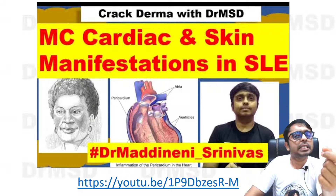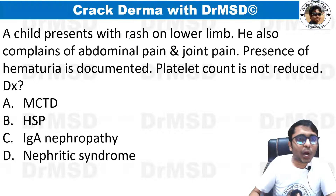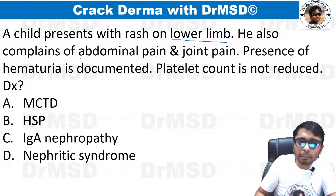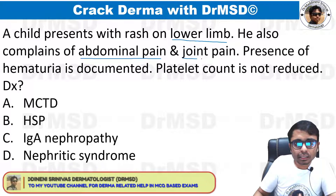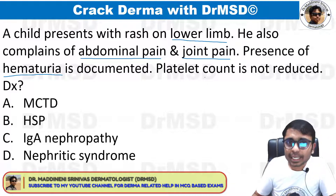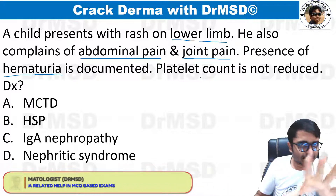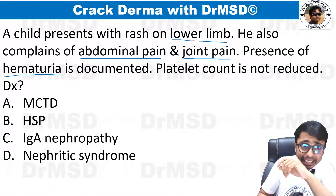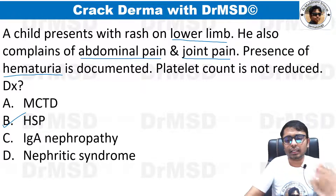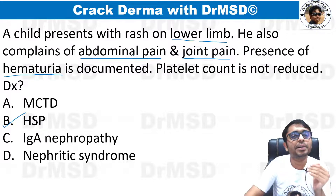A child presents with a rash on the lower limb, abdominal pain, joint pain, and hematuria, but platelet count is not reduced — no thrombocytopenia. The answer is Henoch-Schönlein purpura, an important skin-related and pediatric pathology topic.